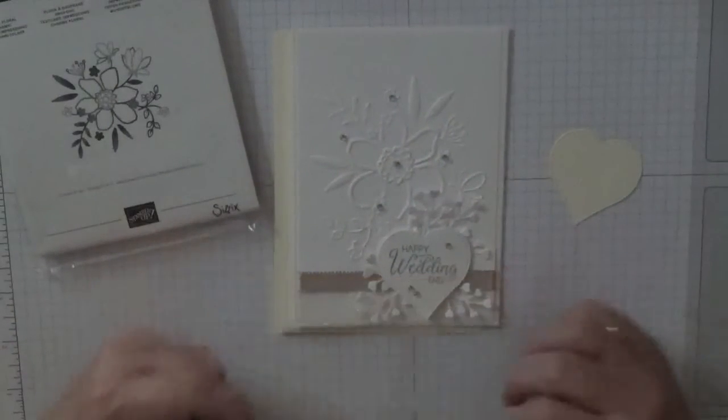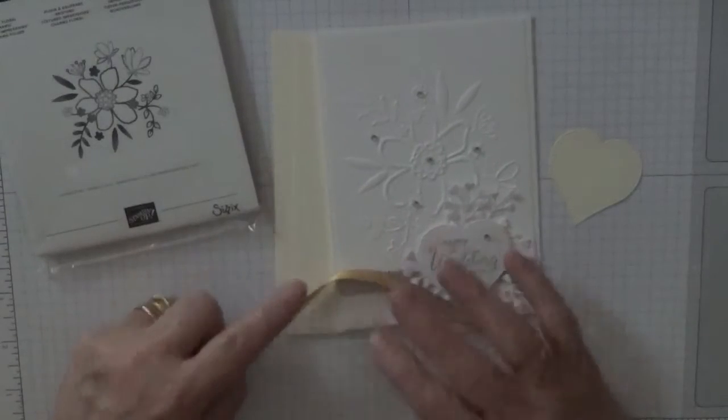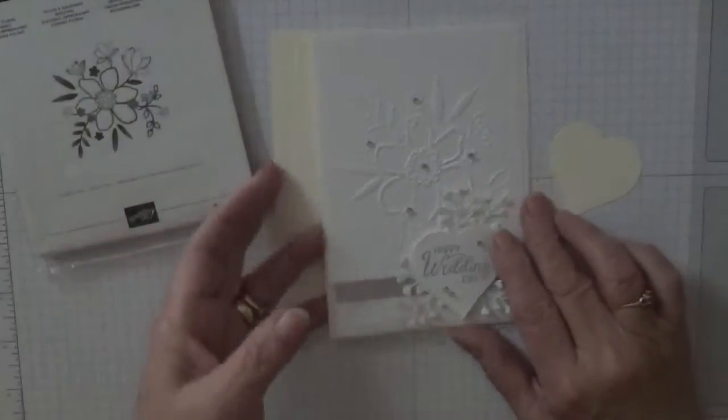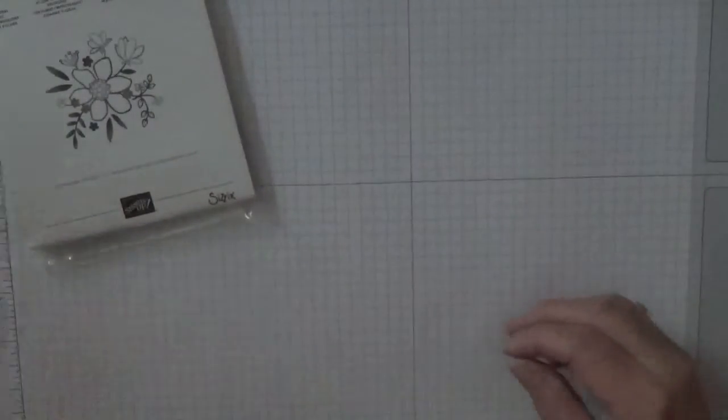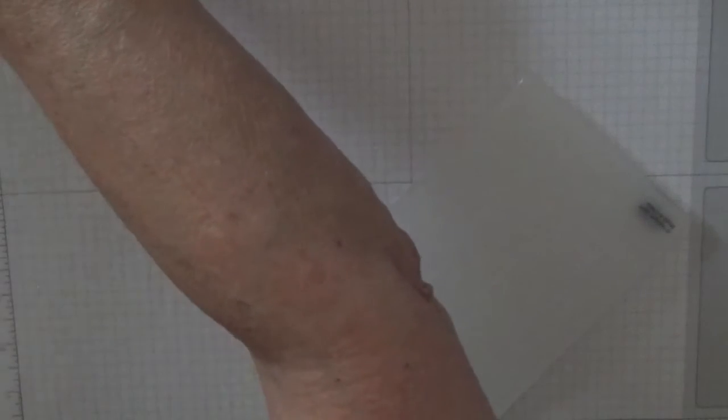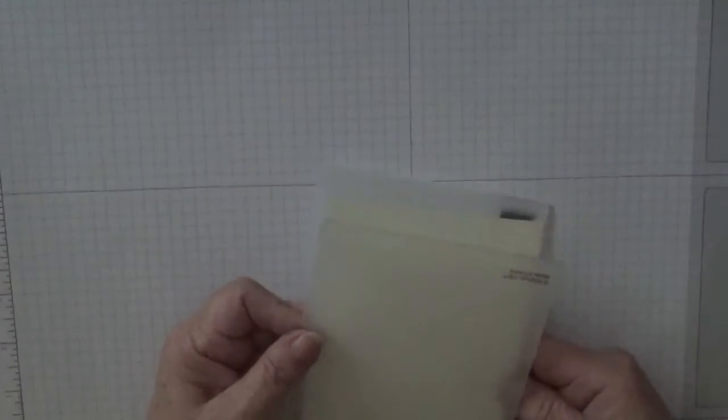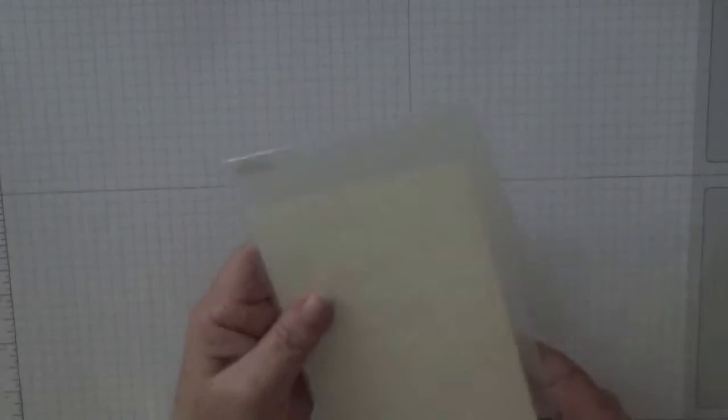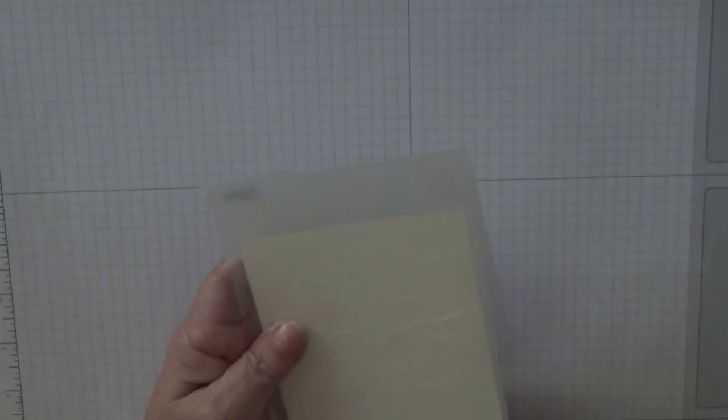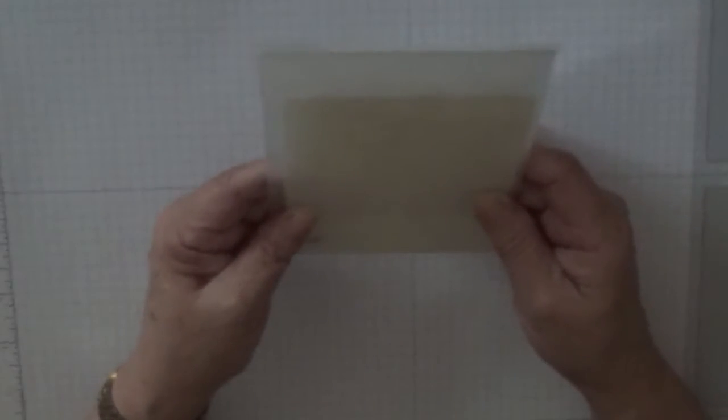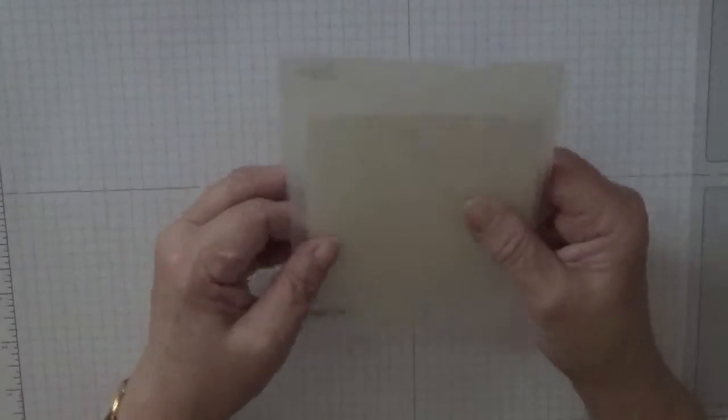Let's get started. I need to bring the Big Shot up to do the embossing folder. I need one of these bits of card. What I want to do this time is get that flower mainly to the top of the card. So that's the back, that's the front.